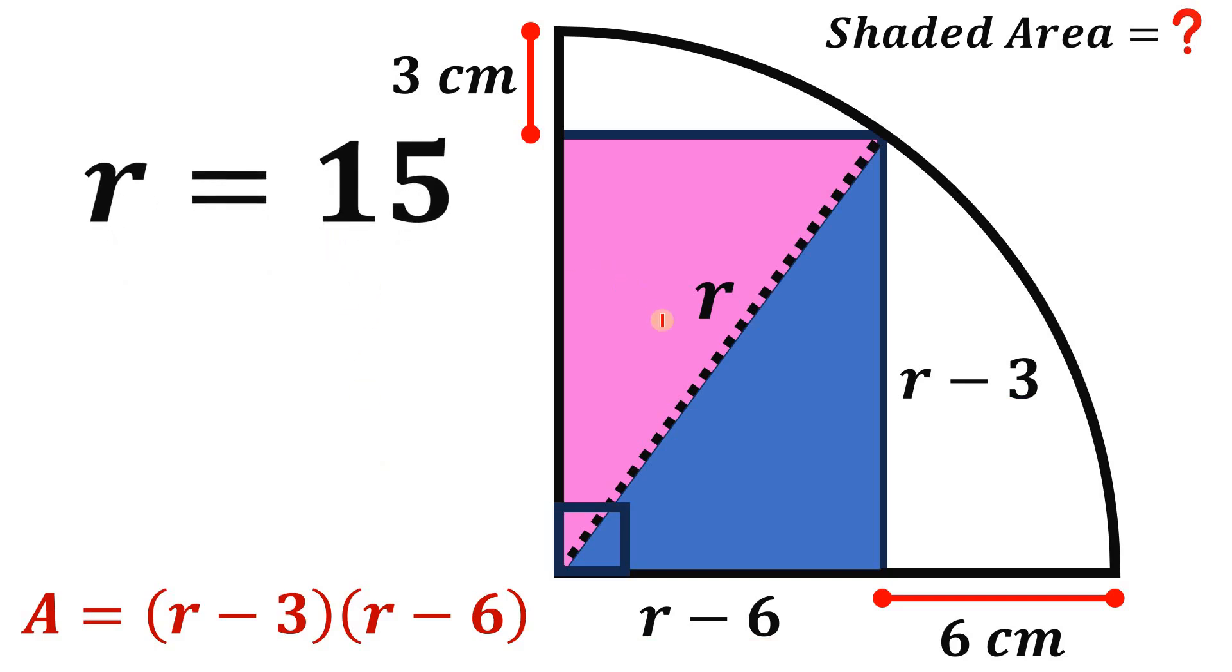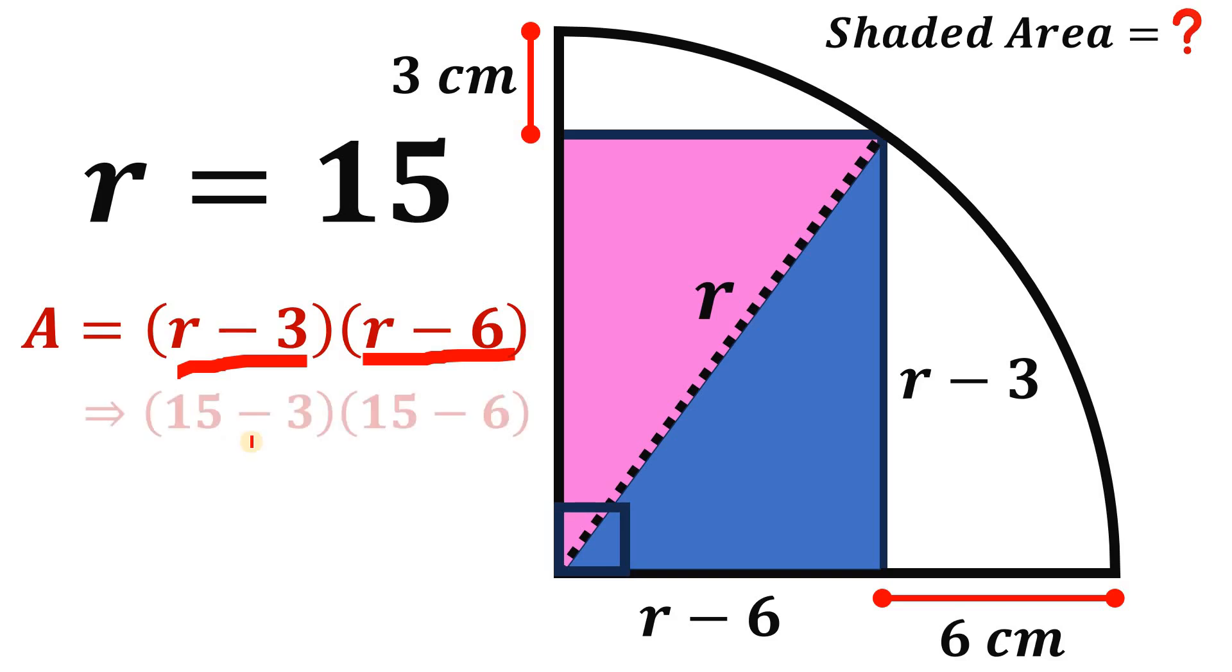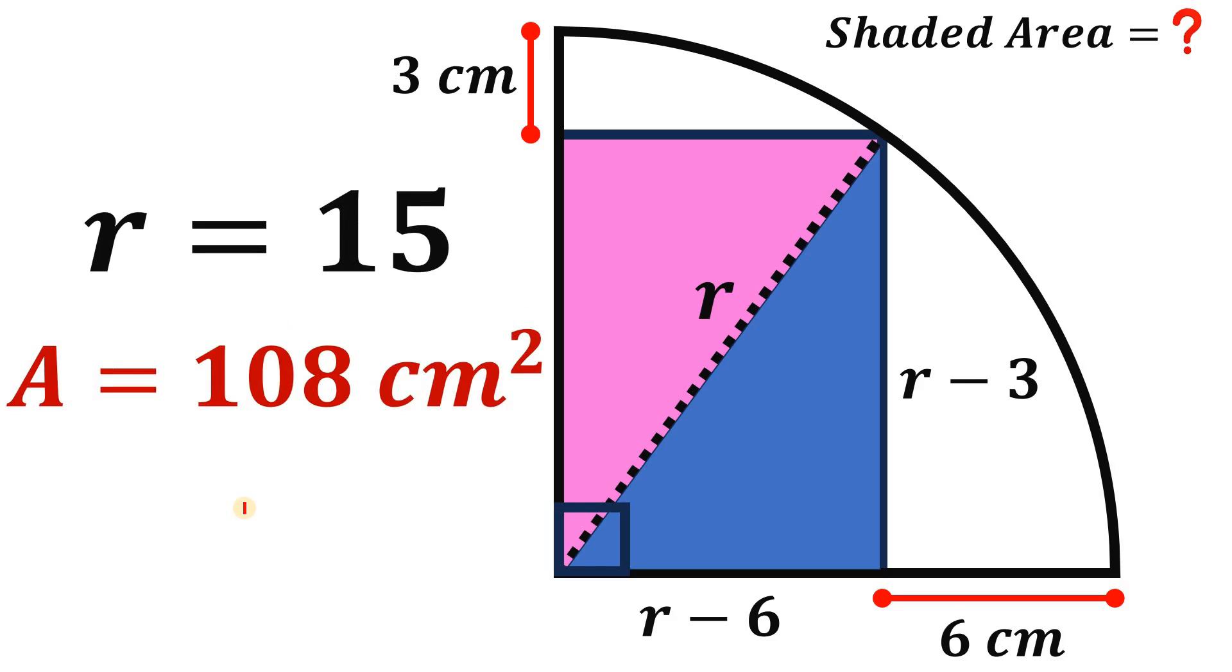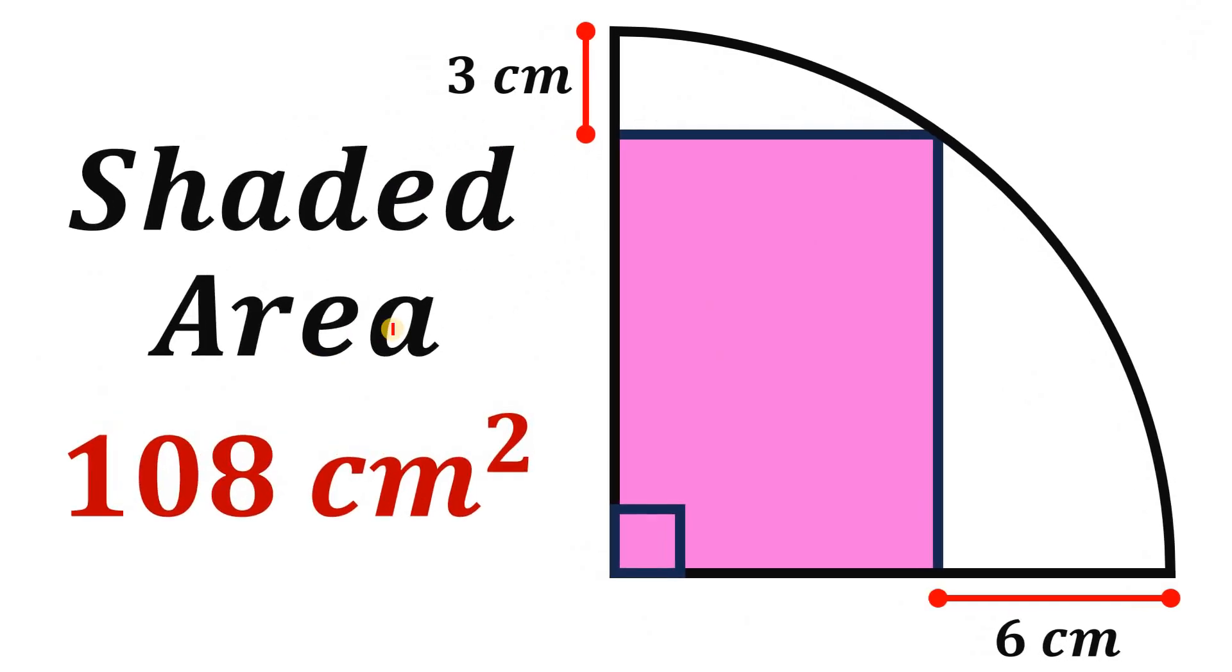Therefore, the only valid value for R is equal to 15 centimeters. So this is the value of R or the radius of this quarter circle. And now we can find the area of this rectangle using this expression (R minus 3) multiplied by (R minus 6). We know the value of R is 15. So we have 15 minus 3 multiplied by 15 minus 6. 15 minus 3 is 12. 15 minus 6 is 9. 12 times 9 is 108. Therefore, the area of the rectangle is 108 square centimeters. Therefore, given this figure, the area of the shaded region is simply equal to 108 square centimeters. And as always, we are done.